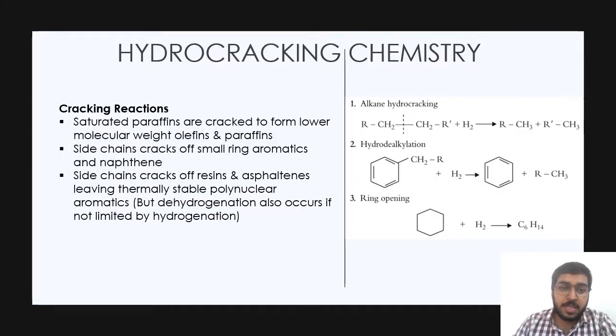After the previous discussion, now we know what hydrocracking is. Let's look at hydrocracking chemistry to know what is exactly going on at the molecular level. First, the cracking reactions. Saturated paraffins are cracked to form lower molecular weight olefins and paraffins. Side chain cracks off small ring aromatics and naphthenes. Side chain also cracks off resins and asphaltenes leaving thermally stable polynuclear aromatics. But dehydrogenation also occurs if not limited by hydrogenation.